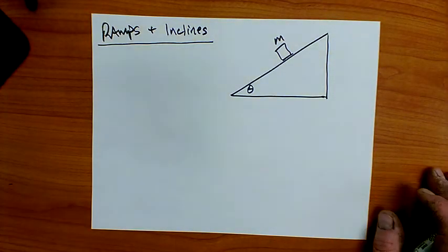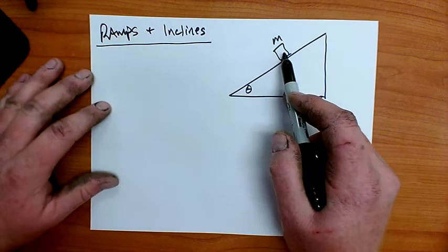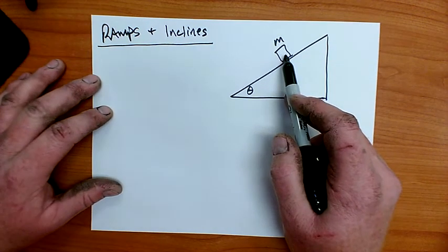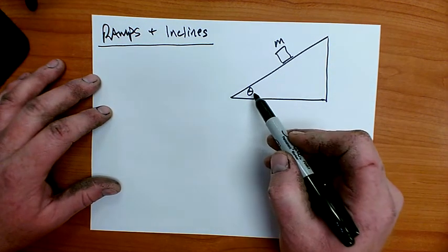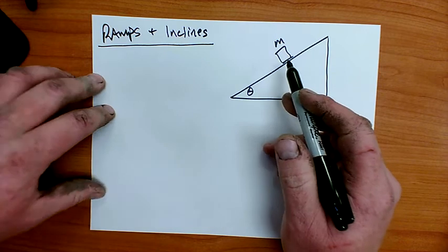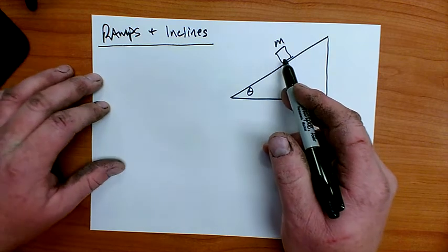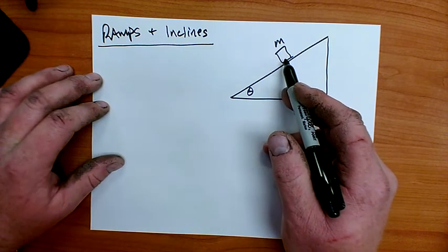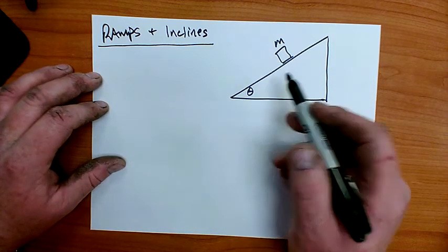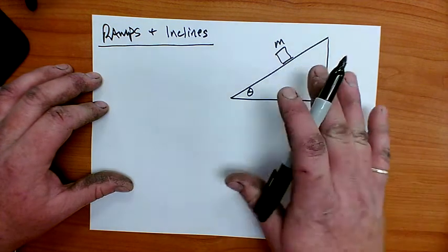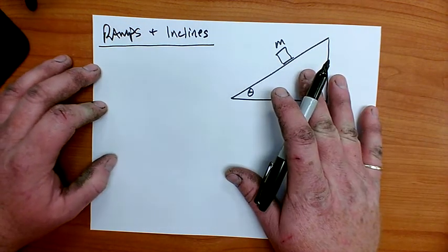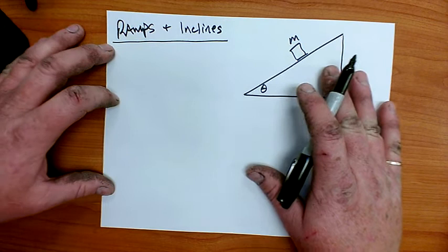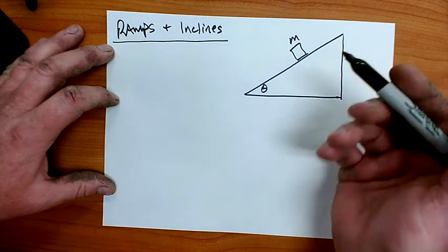In this lesson we're going to be learning about ramps and inclines. For example, we have a block of mass m on a ramp with an angle of theta as measured from the horizontal. Suppose we want to know the acceleration of the block along the ramp. We'll do one without friction first and then see how friction would affect the problem.